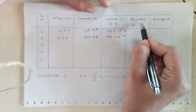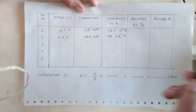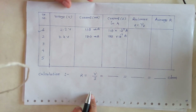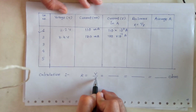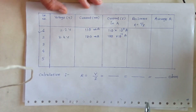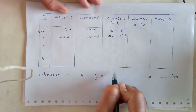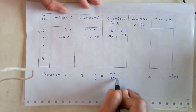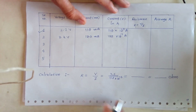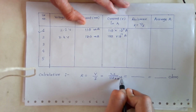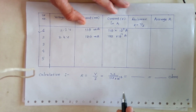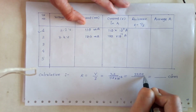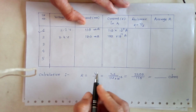Now, from the formula of resistance R = V / I, we will calculate the resistance of the conductor. I will take only the first reading and calculate it. Formula: R = V / I. Substituting the values: voltage is 2.2 divided by 110 × 10⁻³. The 10⁻³ in the denominator moves to the numerator and becomes 1000, so the simplification gives 2200 divided by 110, which equals 20 ohm.